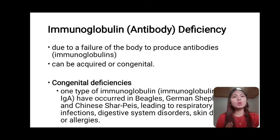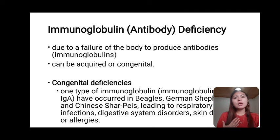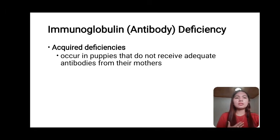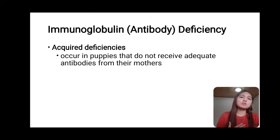Immunoglobulin or antibody deficiency is due to the failure of the body to produce antibodies and can be acquired or congenital. Congenital deficiency of IgA has occurred in Beagles, German Shepherds, and Chinese Shar-Peis, leading to respiratory infections, digestive system disorders, skin disease, and allergens. Acquired deficiencies occur as part of any disease that disrupts antibody production, including some viral infections such as distemper and parvovirus. This increases risk of respiratory infections from 1 to 6 months of age and can occur in puppies that do not receive adequate antibodies from their mothers.